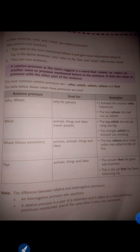You have to remember this table. 'Who' and 'whom' are used only for persons — for example: 'The boy whom she met was an athlete.' 'Which' is used for animals, things, and ideas. 'Whose' shows possession and can be used for persons, animals, things, and ideas. 'That' can also be used for persons, animals, things, and ideas — for example: 'This is the cat that has been following me.'